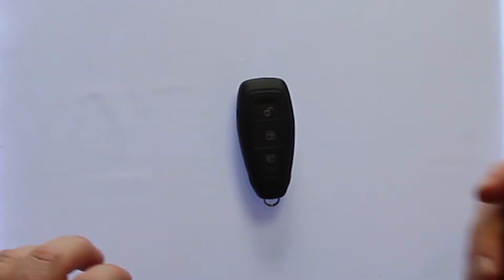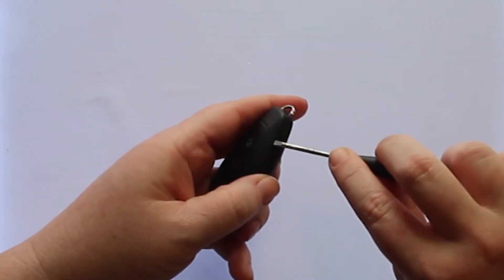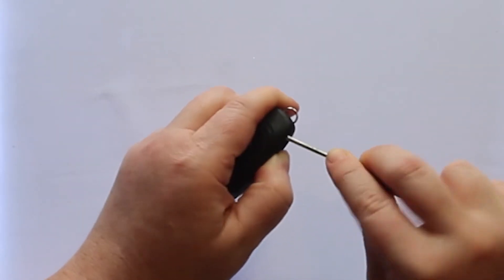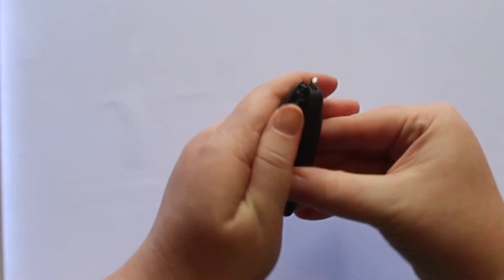To open this key fob, all you'll need is a small flathead screwdriver. You'll want to insert it where the key pushes in, and just pry the key fob open.